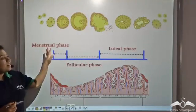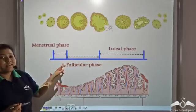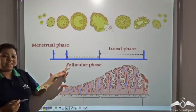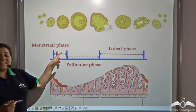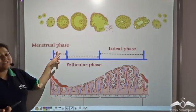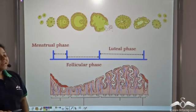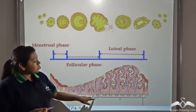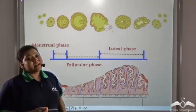These are the different phases of the menstrual cycle. The first three to five days are known as the menstrual phase, characterized by the discharge of the endometrial lining if fertilization does not take place. After that, from the fifth day to the thirteenth day, there is the follicular phase.